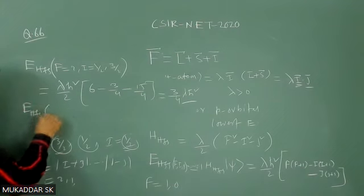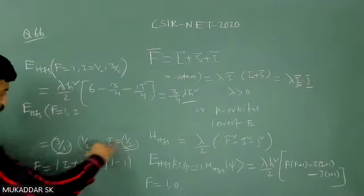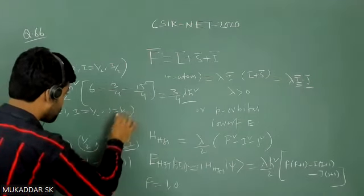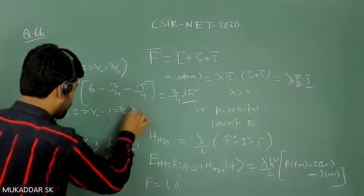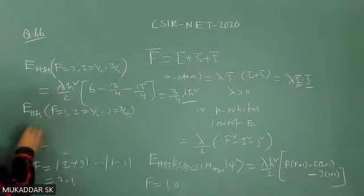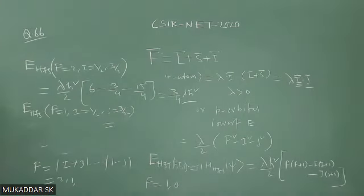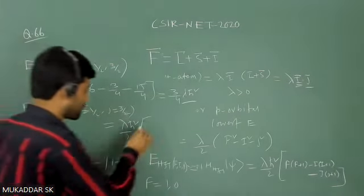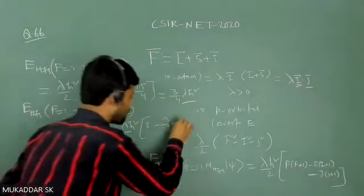For the next combination, take F = 1 arising from I = 1/2 and J = 3/2. Calculate E_HFS = (λℏ²/2)[F(F+1) − I(I+1) − J(J+1)]. F(F+1) = 2, I(I+1) = 3/4, and J(J+1) = 15/4. So E_HFS = (λℏ²/2)[2 − 3/4 − 15/4].